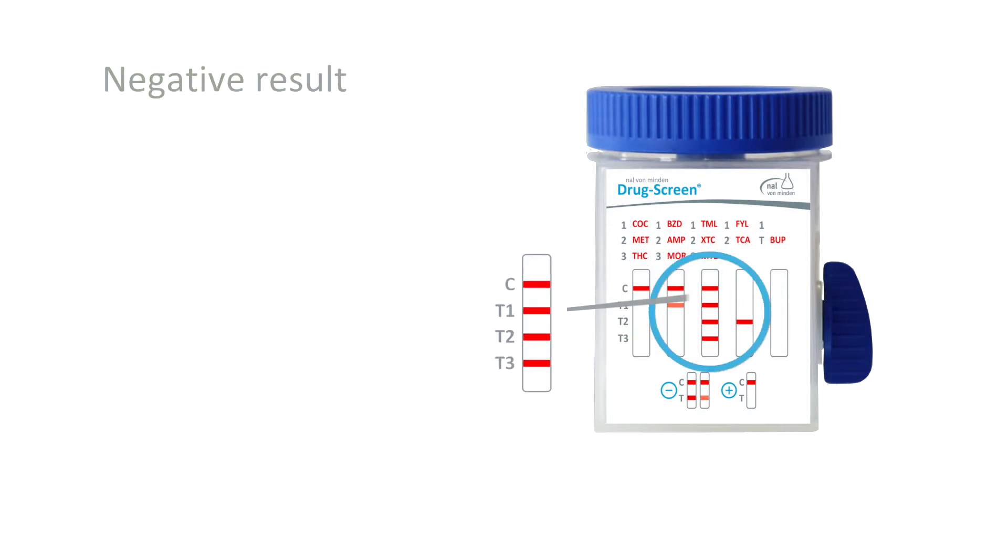A line in the test line region indicates a negative result. Again, a control line signifies that the test has performed correctly and should always be present.